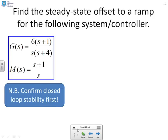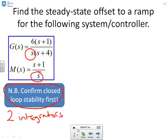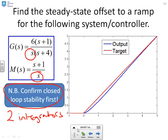Example with two integrators in the loop: assuming the closed-loop system is stable, having two integrators means there will be no offset to a ramp. The plots confirm this — the output converges to the ramp asymptotically, and the offset is zero.